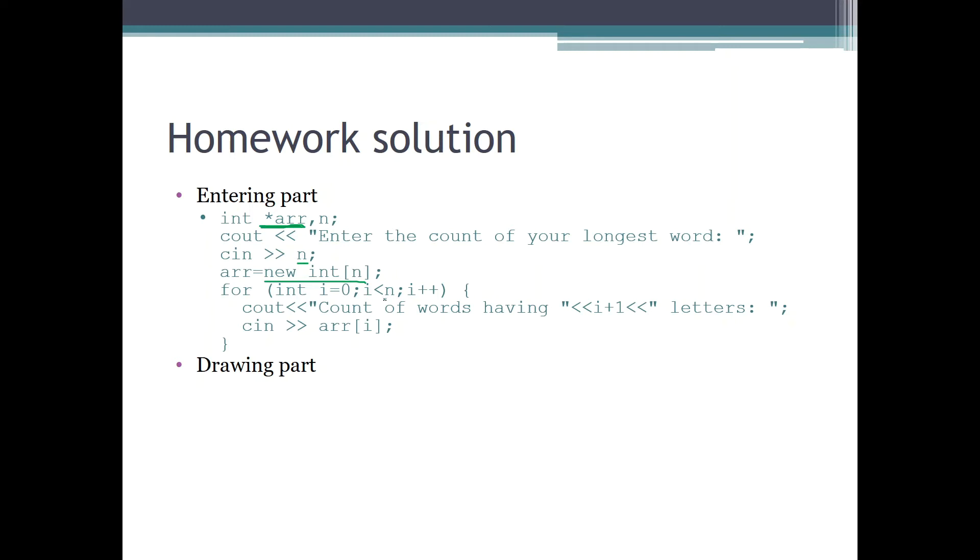We didn't use the array element number zero at all because there is not any word with zero length, and we started with one. But in this case we have only the length n, not n plus one, so we have to use also the element number zero. Actually in element number zero will be stored the information about how many words are there with length one, not zero.